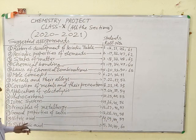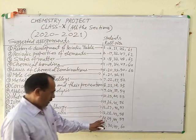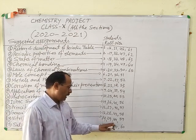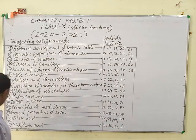Nitric acid for roll numbers 4, 14, 29, 44 and 59.